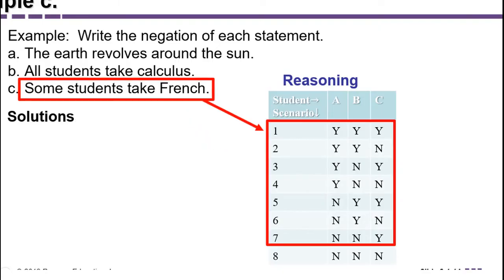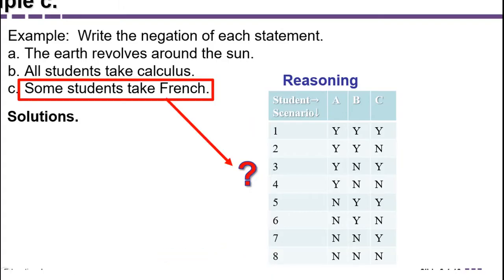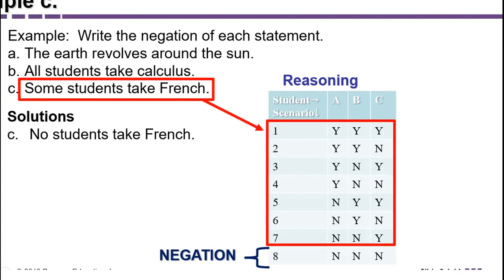The only scenario that makes 'some students take French' false is scenario eight — where A is not taking French, B is not taking French, and C is not taking French. So the negation of 'some students take French' is 'no students take French.'